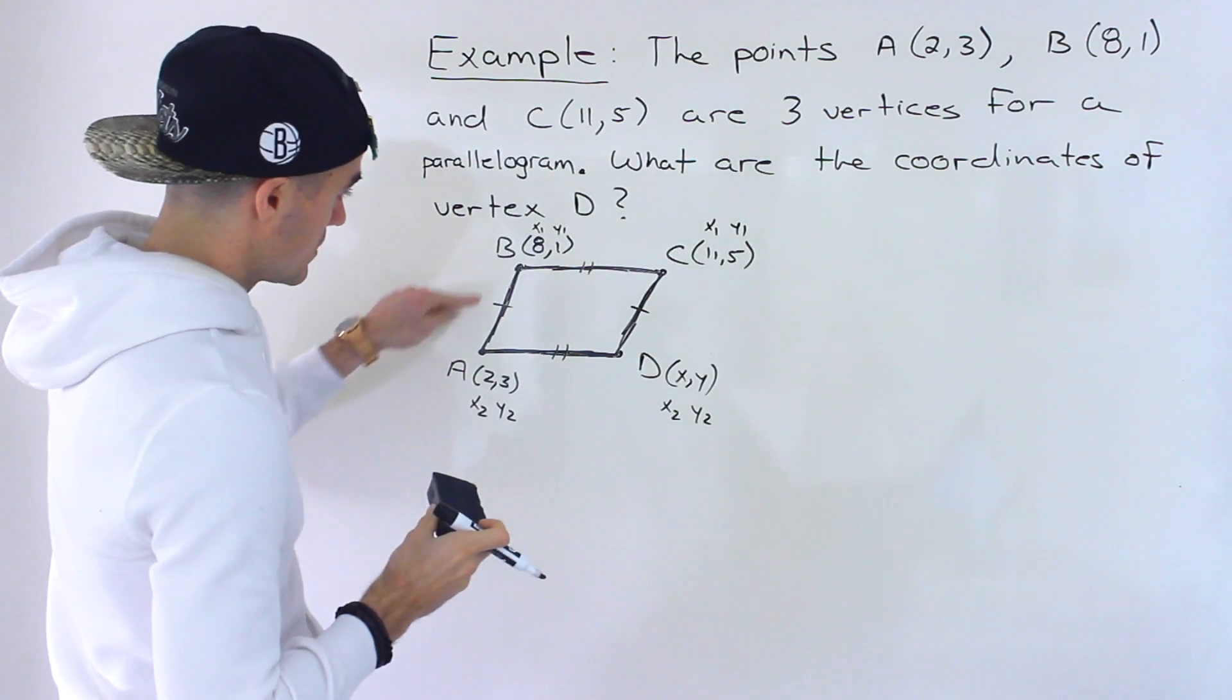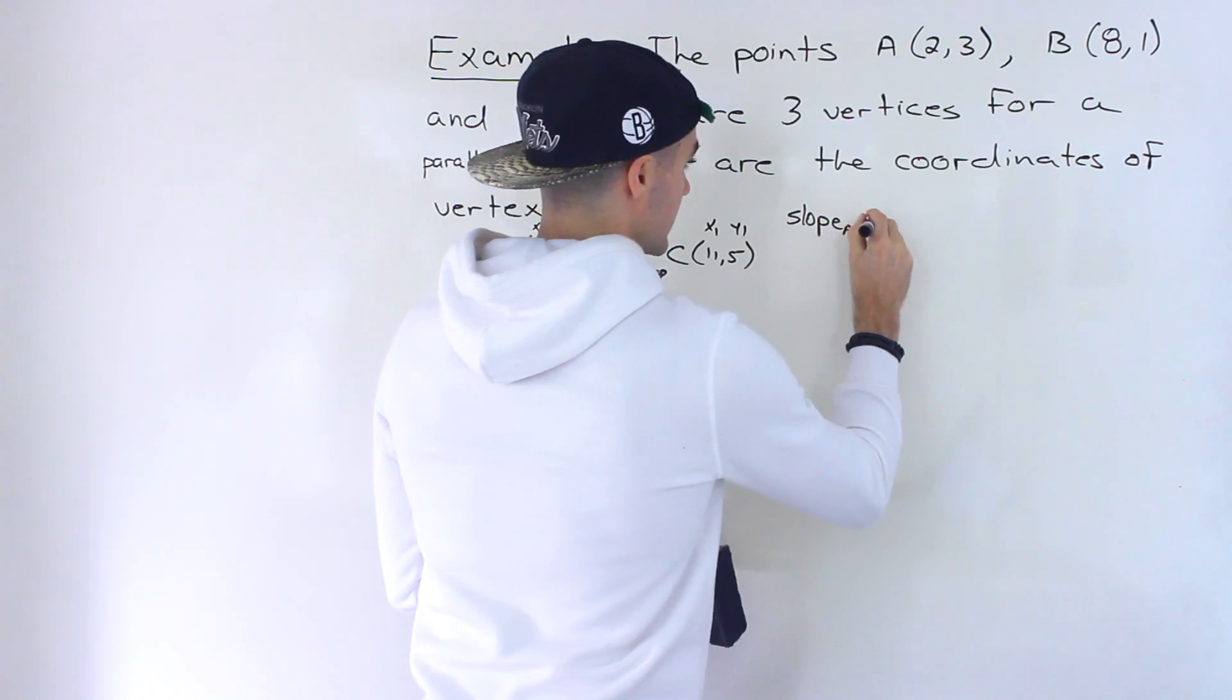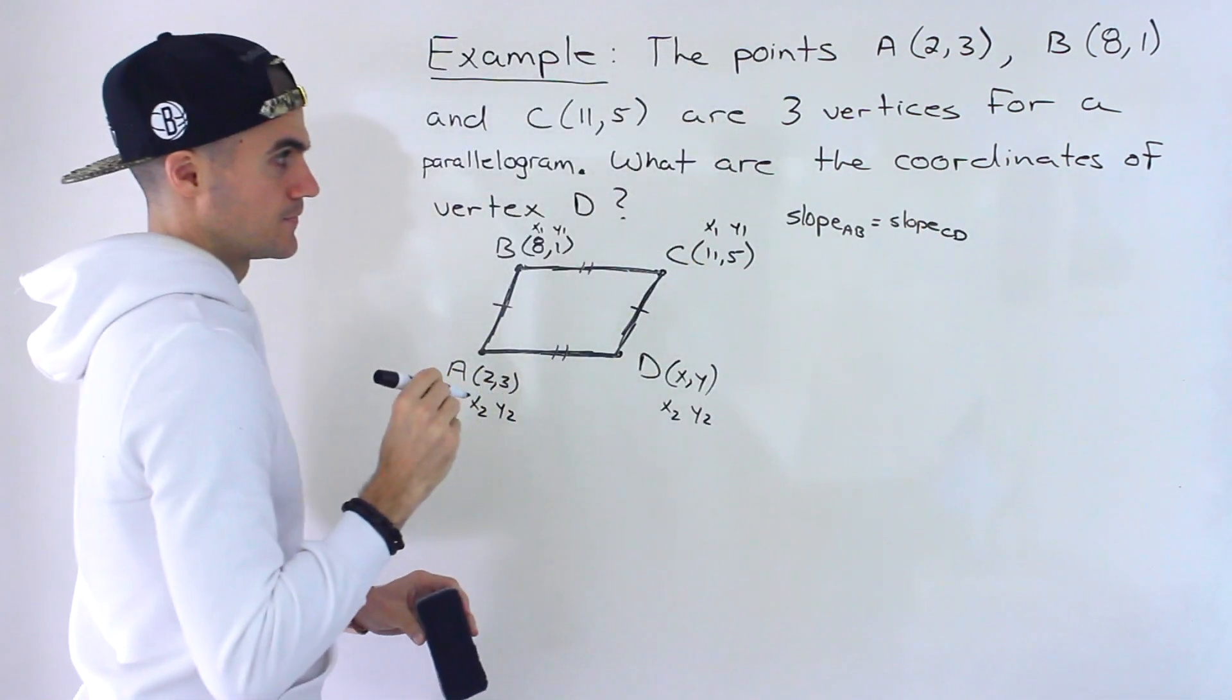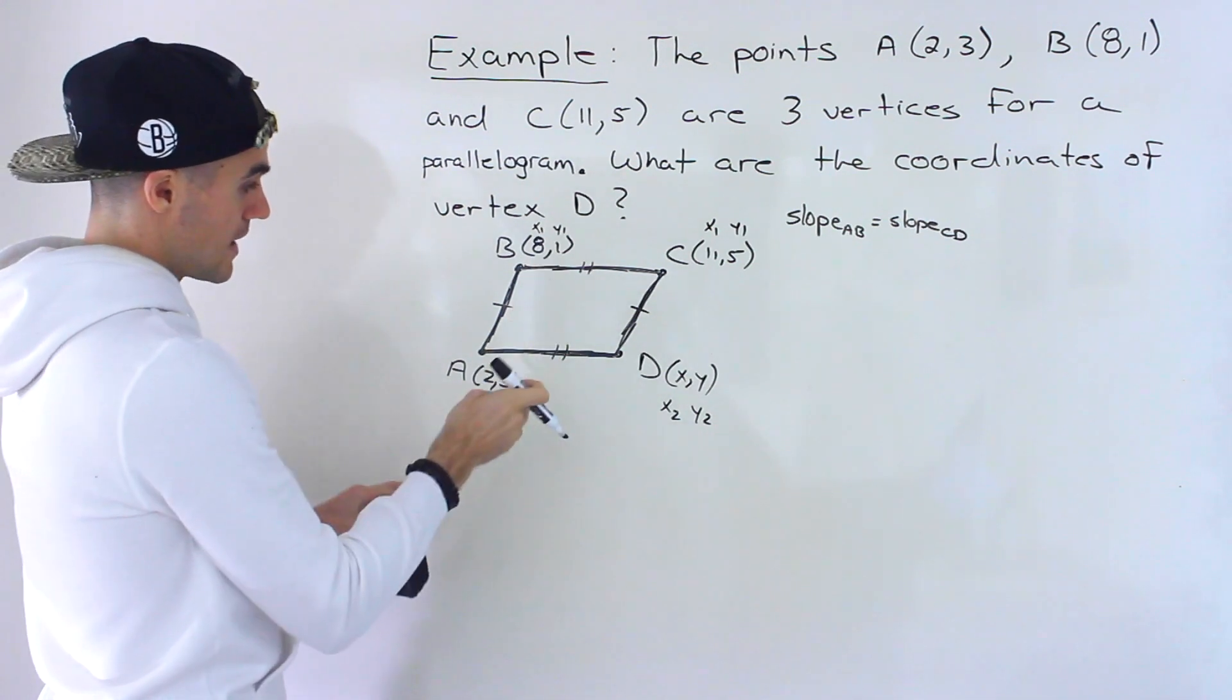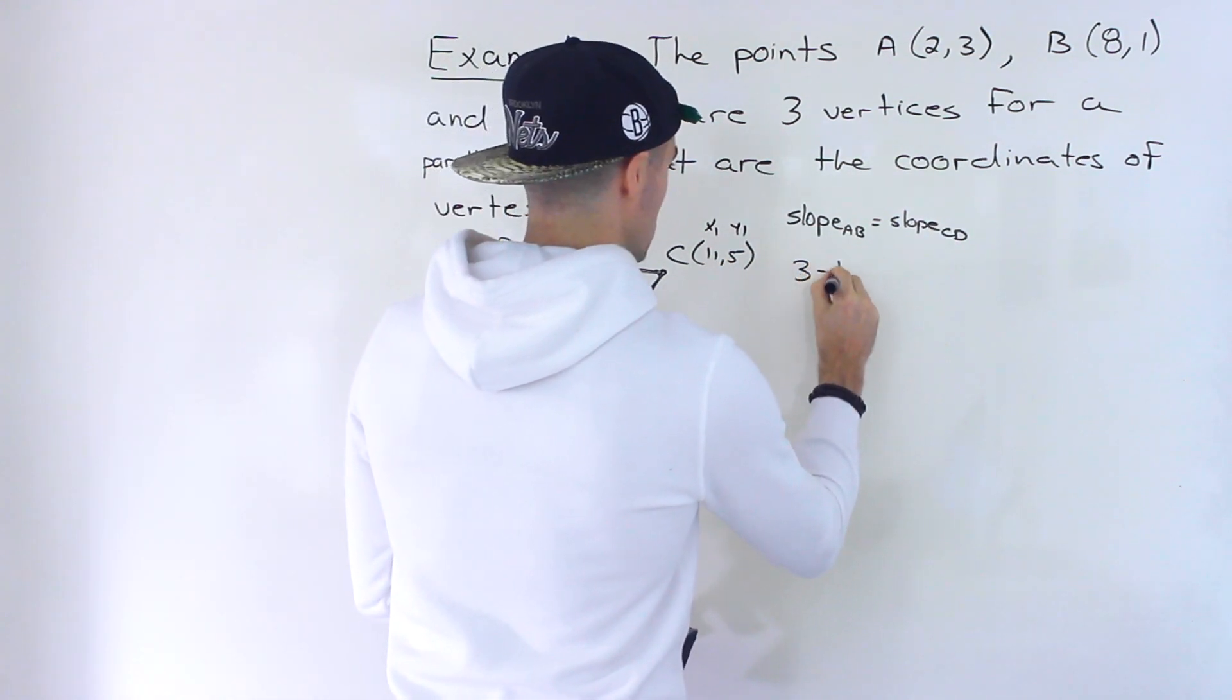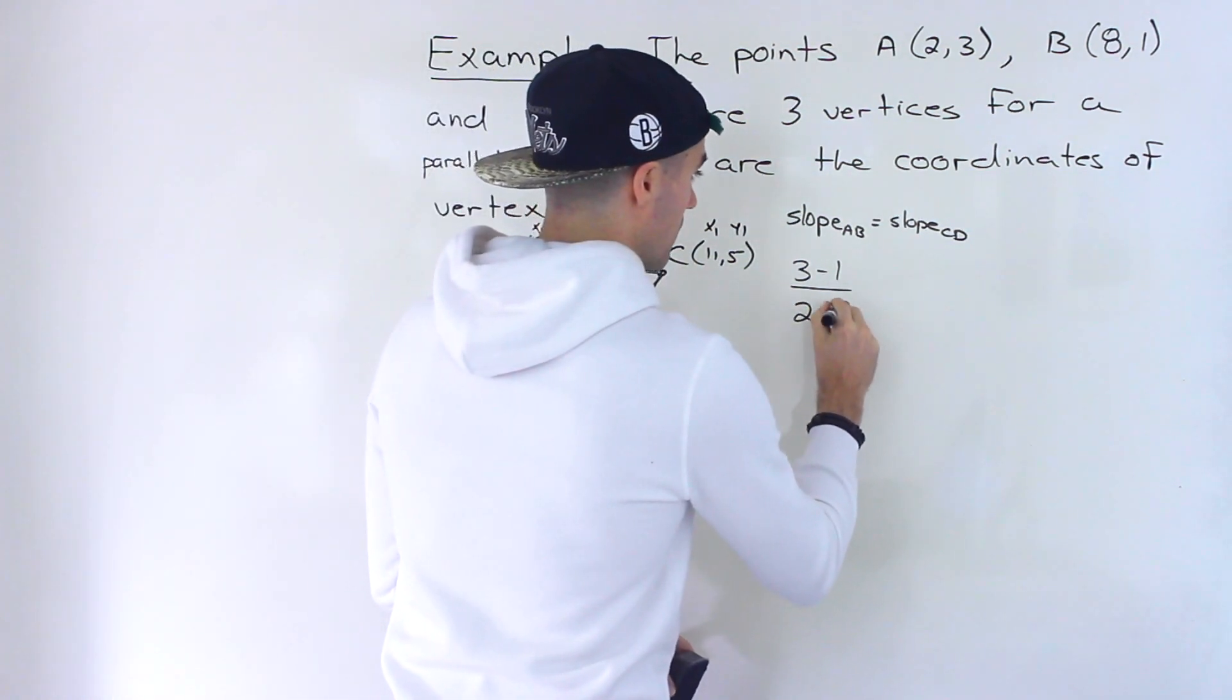So remember, this slope, let's write it down just in general, slope AB has to equal the slope of CD. That's the first equation we're going to make. Now what's the slope of AB going to be? Well, it's going to be Y2 minus Y1. So we're going to have 3 minus 1 over X2 minus X1, 2 minus 8.